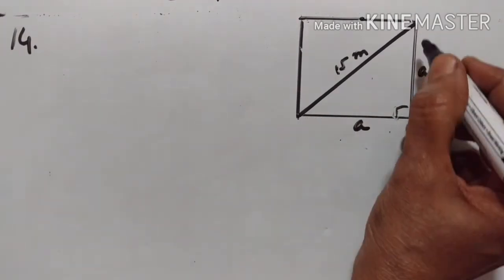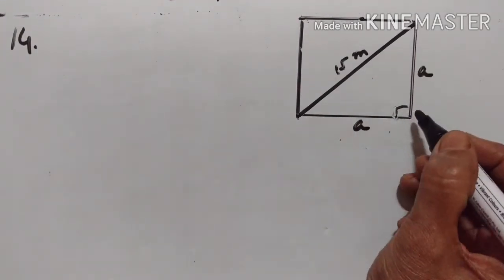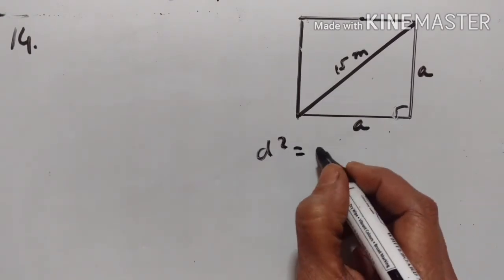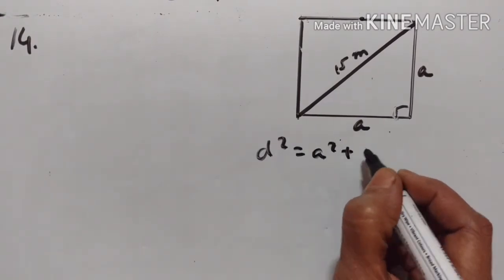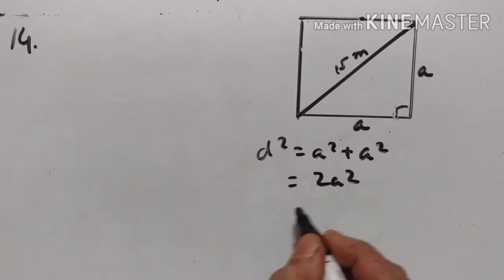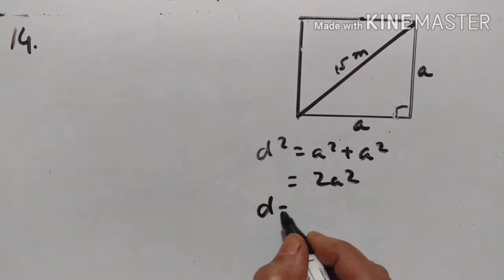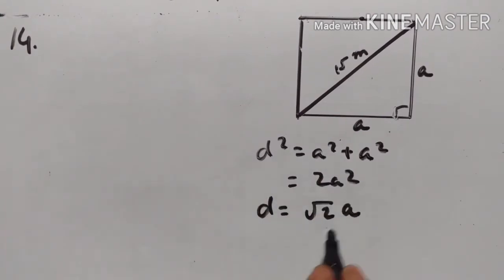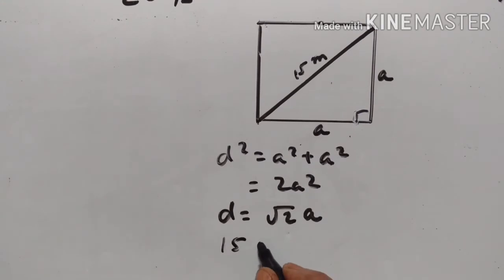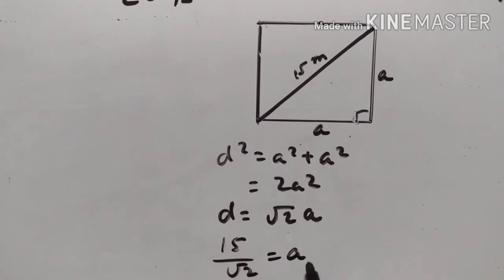Suppose a is equal to the side of the square. Then diagonal squared is equal to a squared plus a squared, which is equal to 2a squared. So diagonal is equal to square root of 2a. Since the diagonal is equal to 15, we get 15 divided by square root of 2 equals a.